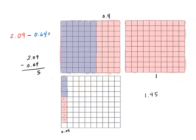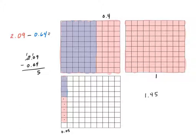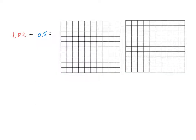Looking at the original problem: I started with nine hundredths and took away four of those, which left me with five still shaded red. Then I was trying to do zero tenths minus six tenths, which I can't do, so I have to regroup. I then have ten tenths minus six tenths — up here I have a full hole, took away the six tenths, and I'm left with four tenths. The other whole has nothing taken away, so it stays all red. My answer is one and forty-five hundredths.